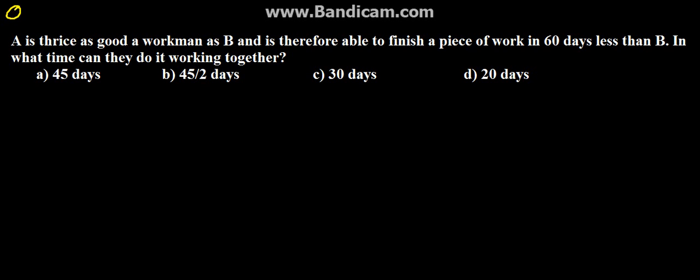Hello everyone. The next question in this series is: A is three times as good a workman as B and therefore is able to finish a piece of work in 60 days less than B.